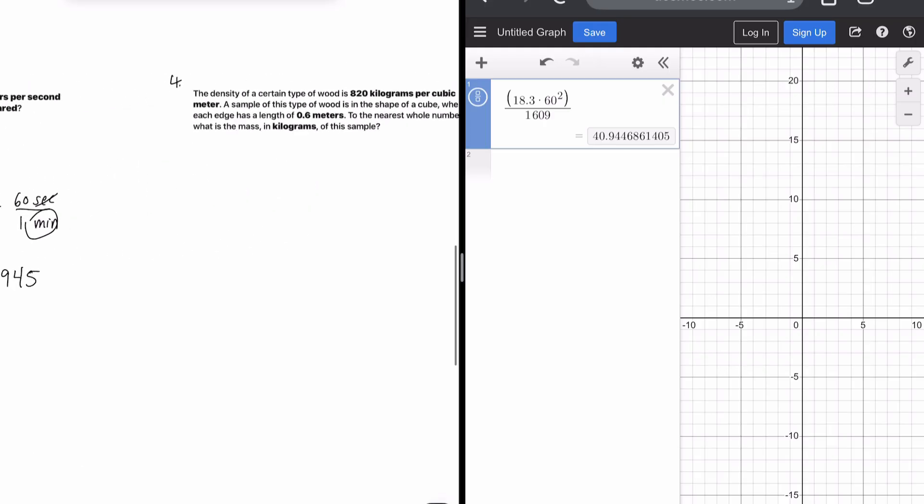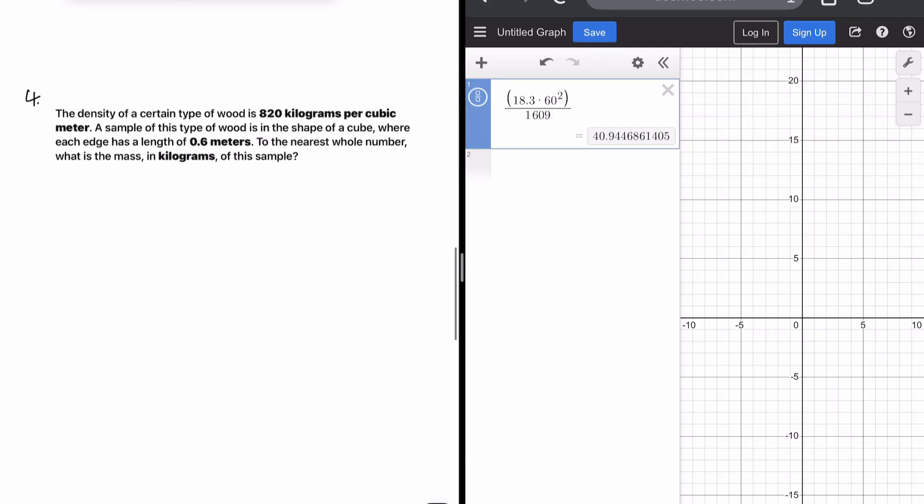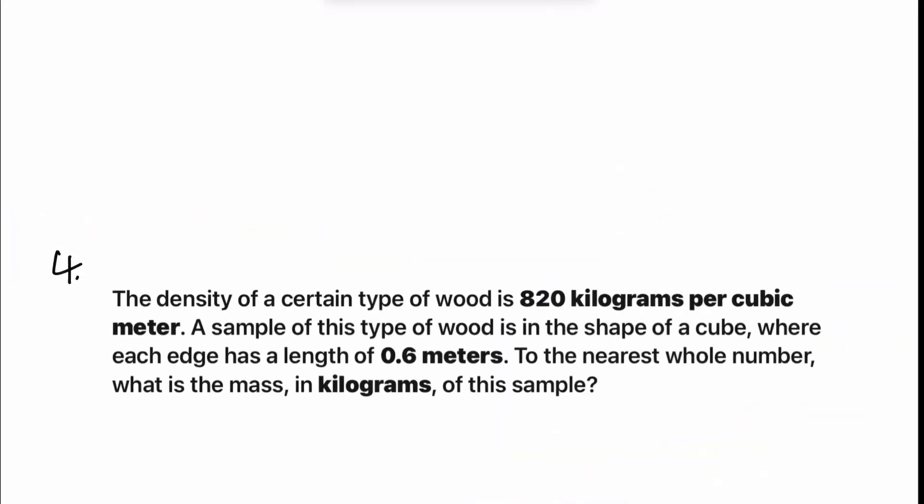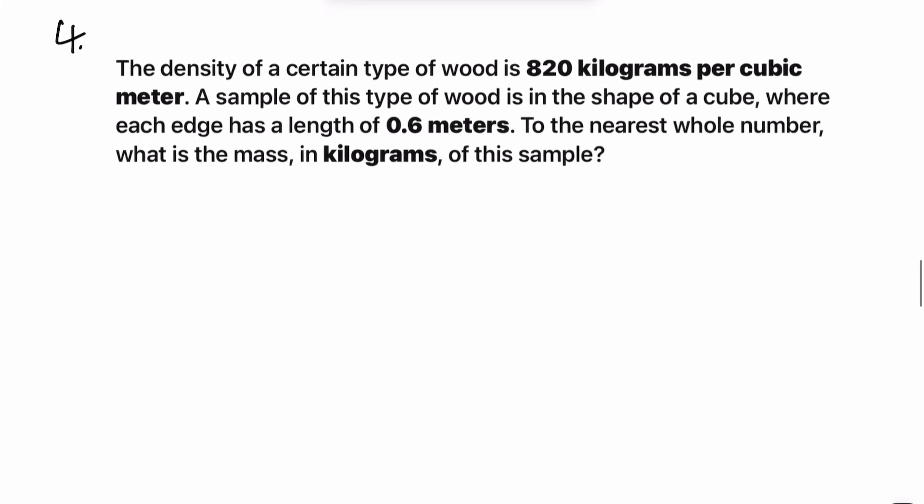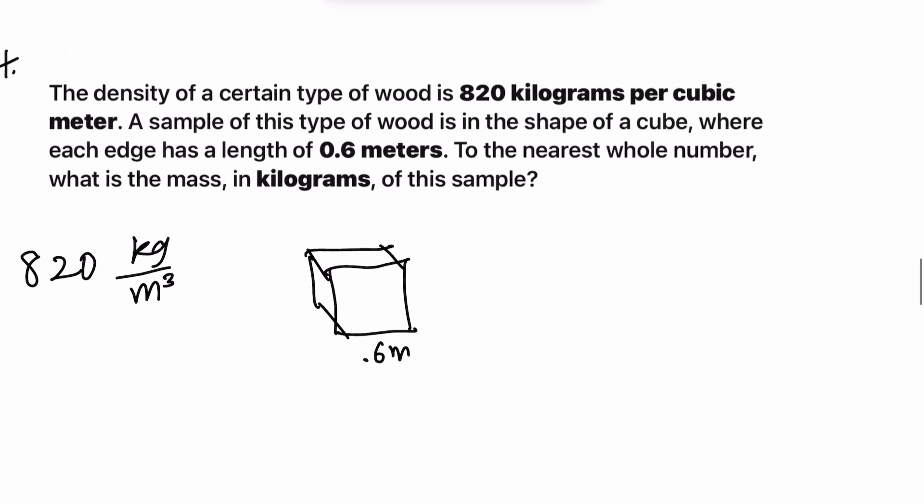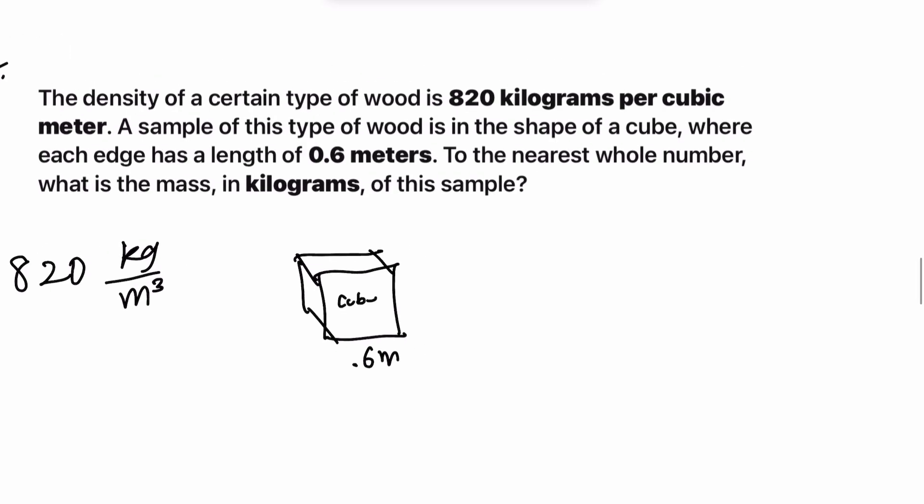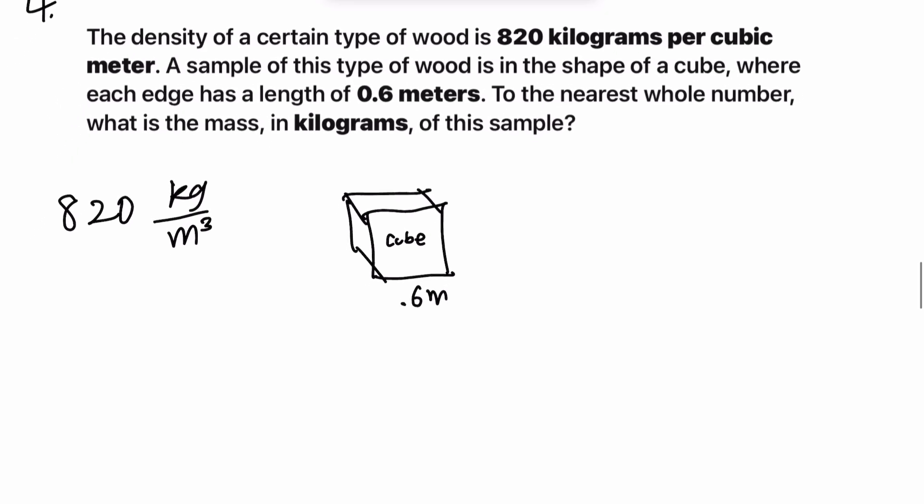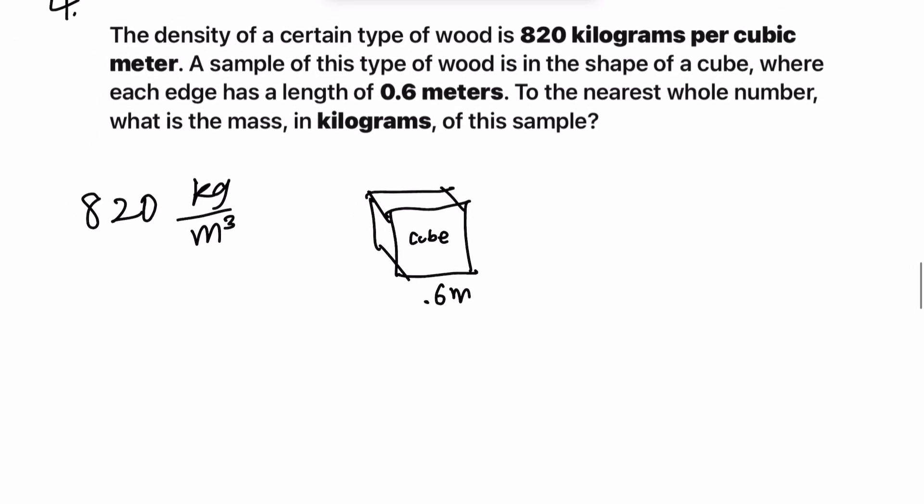Let's move on to number four. This is the last one. And this is about density. The density of a certain type of wood is 820 kilograms per cubic meter. A sample of this type of wood is in the shape of a cube. Where each edge length is 0.6 meters. This is a cube. To the nearest whole number, what is the mass in kilograms of the sample?